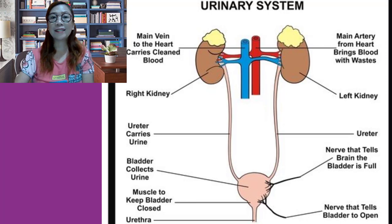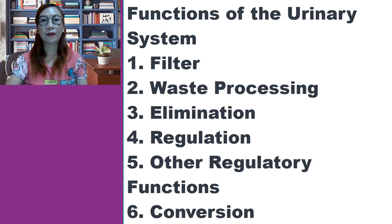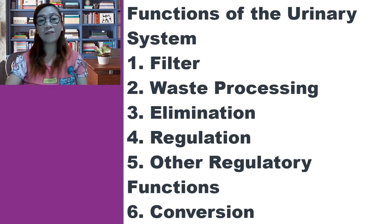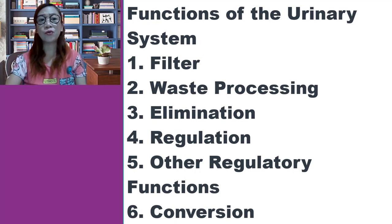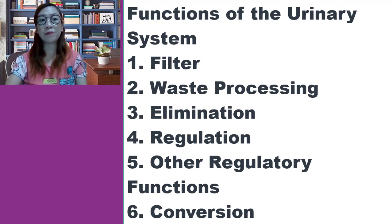I will be discussing the functions of the urinary system. The first function is filtration. Every day, kidneys filter gallons of fluid from the bloodstream. Another function is waste processing — the kidneys process this filtrate, allowing waste and excess ions to leave the body in urine while returning needed substances to the blood in just the right proportion.